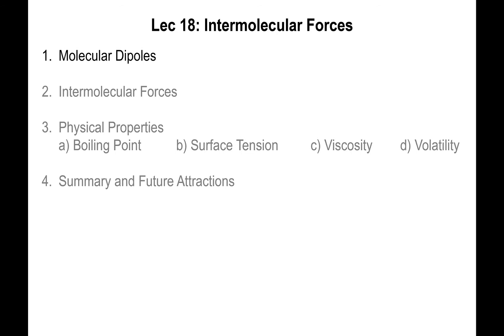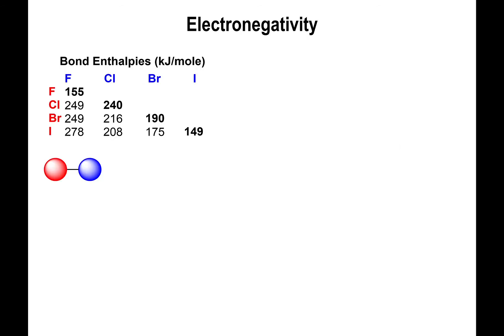We start by talking about molecular dipoles. The idea begins with electronegativity — specifically, the tendency of an atom to attract electrons towards itself. The moment you combine two elements of different kinds together, one of them will have a greater tendency of attracting electrons as a result of having a greater effective nuclear charge.